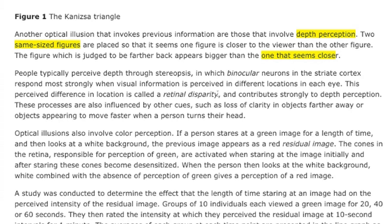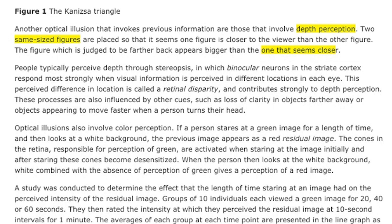That reads a bit confusing to me — the bigger one should be closer if they're the same size. Something feels off in how I'm interpreting it. Yeah, so we have two same-sized figures and one looks closer. You'd expect the closer one to look bigger. However, they are the same size, so the one farther back ends up seeming bigger because we perceive it as farther away. If one is further back but they continue to look the same size, then yes, the back one seems bigger. It doesn't help that there's no image provided here.